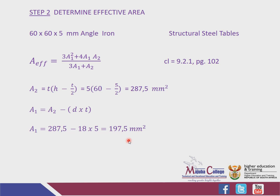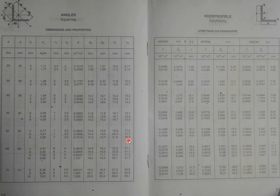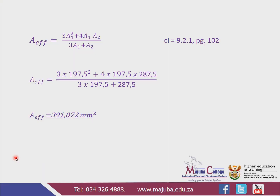Now we have Area 1 and Area 2. Going back to the original formula, we substitute: (3 × 197.5² + 4 × 197.5 × 287.5) / (3 × 197.5 + 287.5). If you punch your calculator, you get 391.072 mm². This is the effective area of the selected member.